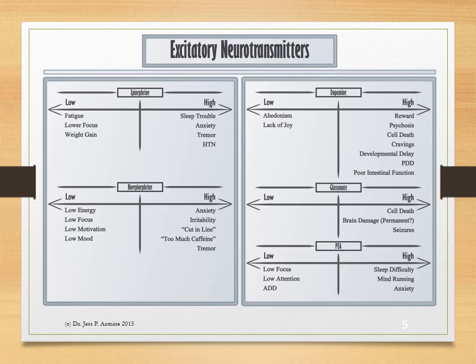Dopamine is your neurotransmitter of satiety. So when you have a nice meal and you have that satisfied feeling, that's dopamine. But when it's very low, you can have a type of depression called anhedonia, which is considered a lack of joy. When it's somewhat high, you can have symptoms of paranoia. And when it's very high, you can have symptoms of psychosis. When it's very high, there's a lot of damage going on in the brain. This also can cause autism and is somewhat involved in developmental delay and poor intestinal function.